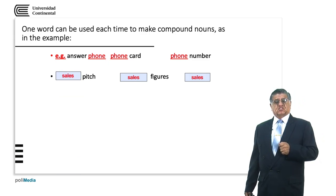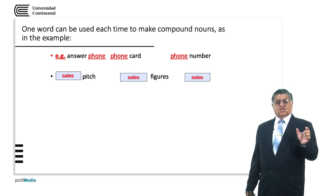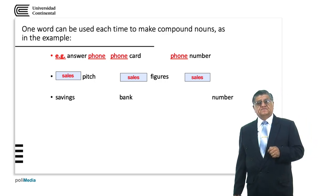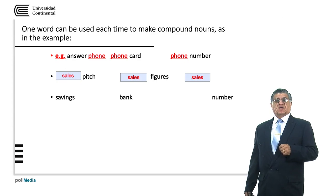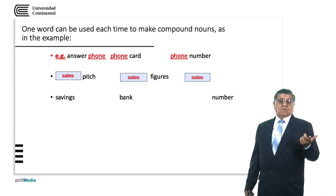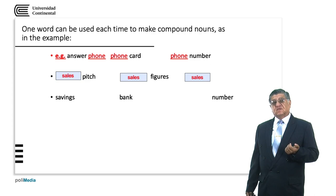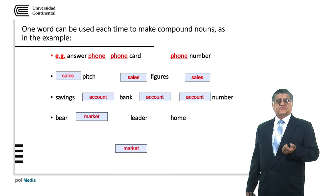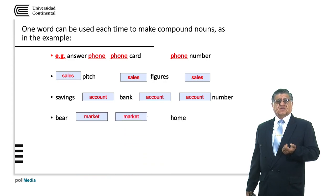Sales pitch — a sales pitch is a particular location in an office or a store where sales occur. Next: savings, bank, number — very easy. 'Savings account', 'bank number'.